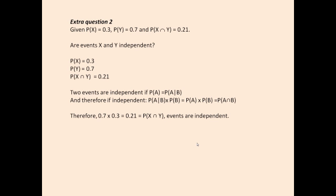To tell whether or not two events are independent, we compare the marginal to the conditional probability. Generally, when we're talking about A and B, if the probability of A is the same as the probability of A given B, then B has had no influence on A, and A and B are independent. That's our rule.